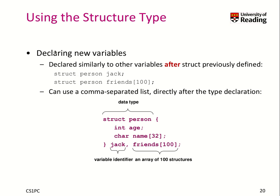How can we use it? We can use it to declare new variables. We have now a struct person Jack. Jack is now a type that has those two elements, age and name. We can also use it to create arrays or any new compound data type like a struct again.